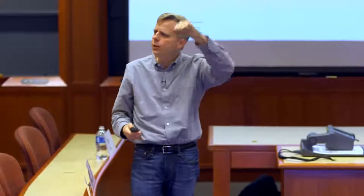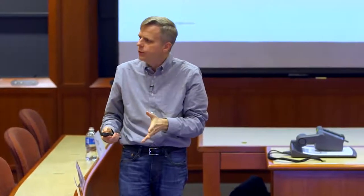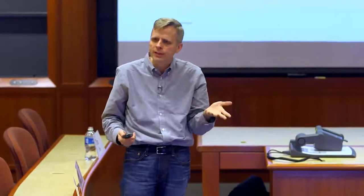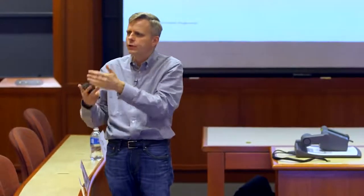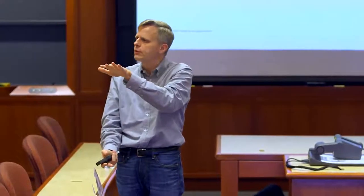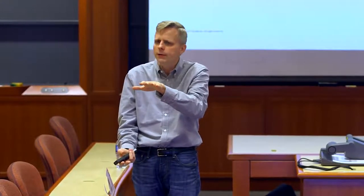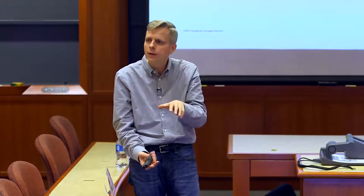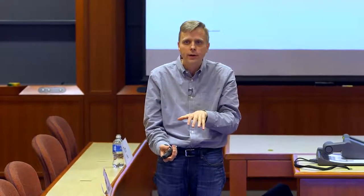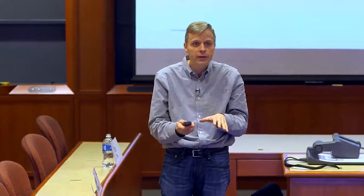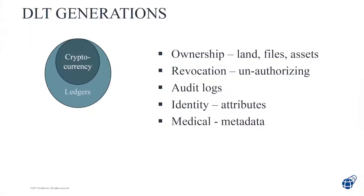Cryptocurrencies were the first generation and they continue to evolve. But people said: this Bitcoin thing was really cool. In order to do the cryptocurrency, it has to remember all these transactions in a ledger — this blockchain. But wait, it's just a computer with ones and zeros. We don't have to limit ourselves to just remembering things about coins. We could put other stuff in that ledger and it would be just as trustworthy. So we got the second generation of DLTs — not just money, but a kind of file system.